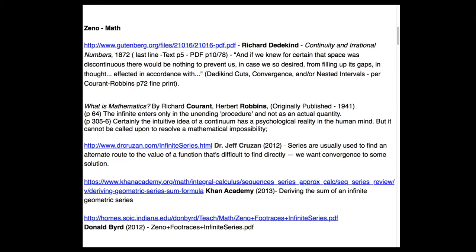In 1872, Dedekind had separated mathematical infinity from the physical world and Courant-Robbins emphasized it as a procedure, not as a quantity.